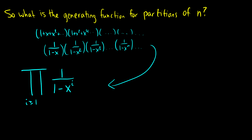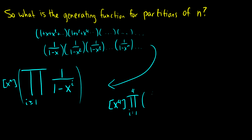That's the generating function for partitions of n, and of course the value you're looking at is going to be the nth coefficient. So we know that the 4th coefficient of the generating function — the product for i = 1 to 4 of 1/(1−x^i) — is just going to be 5. We wouldn't expect you to actually find this because it's not easy to compute; it's more like saying what is the generating function, and a computer can find the coefficient for you.